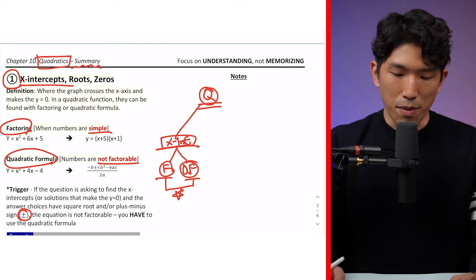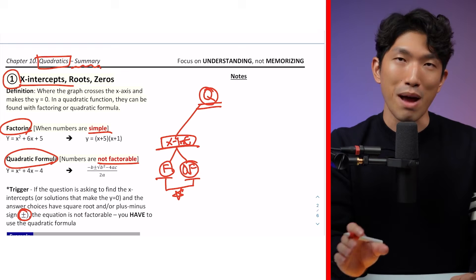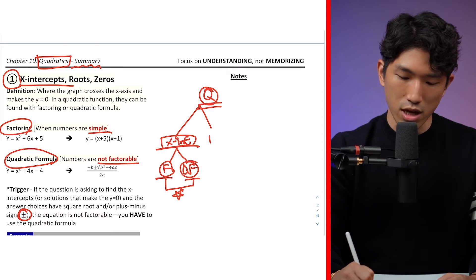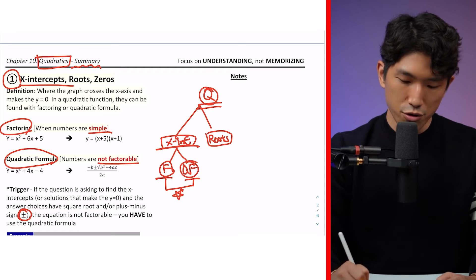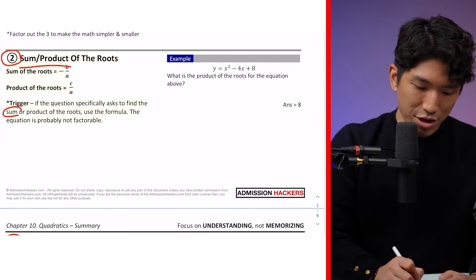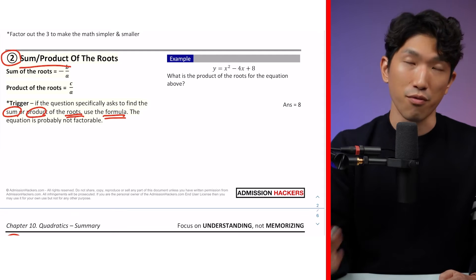And if you have made it this far, here's a quick bonus. Let's have a quick summary on exactly what you need to know for parabolas for the SAT. So, x-intercept was one of them. The next one is going to be the sum and product of the roots. When it comes to roots, you need to understand how to find the sum and the product of the roots. And a quick question pattern is that if the question is specifically asking you to find the sum or product of the roots, then go straight into the formulas.